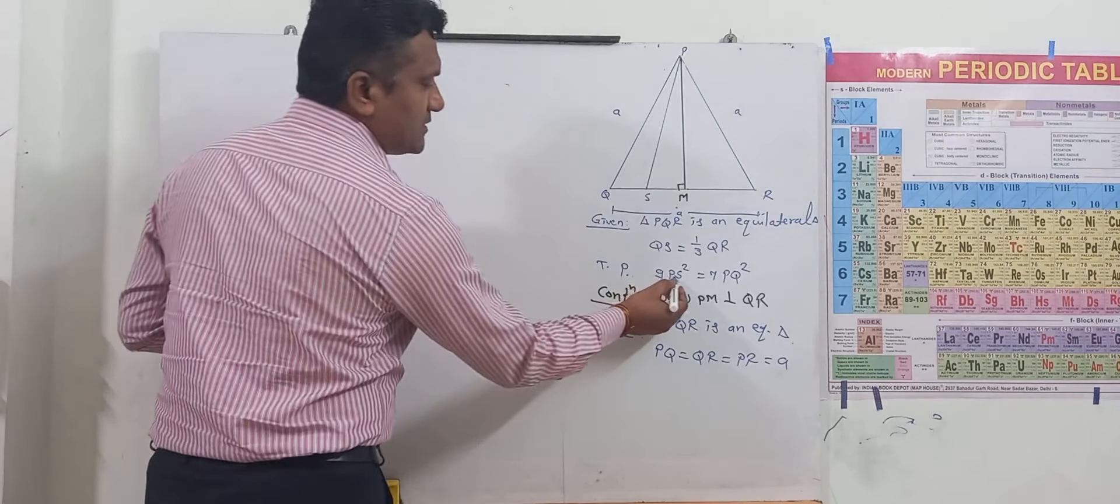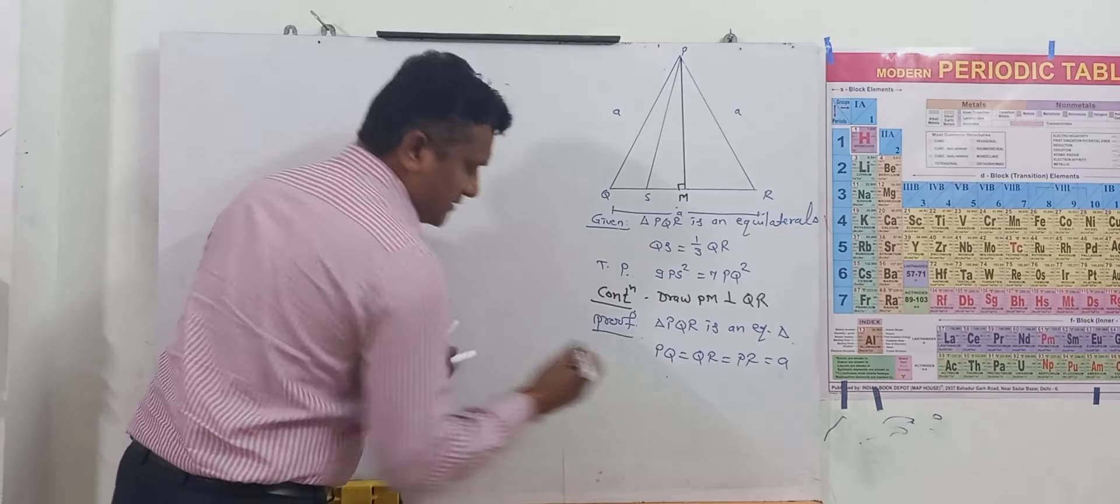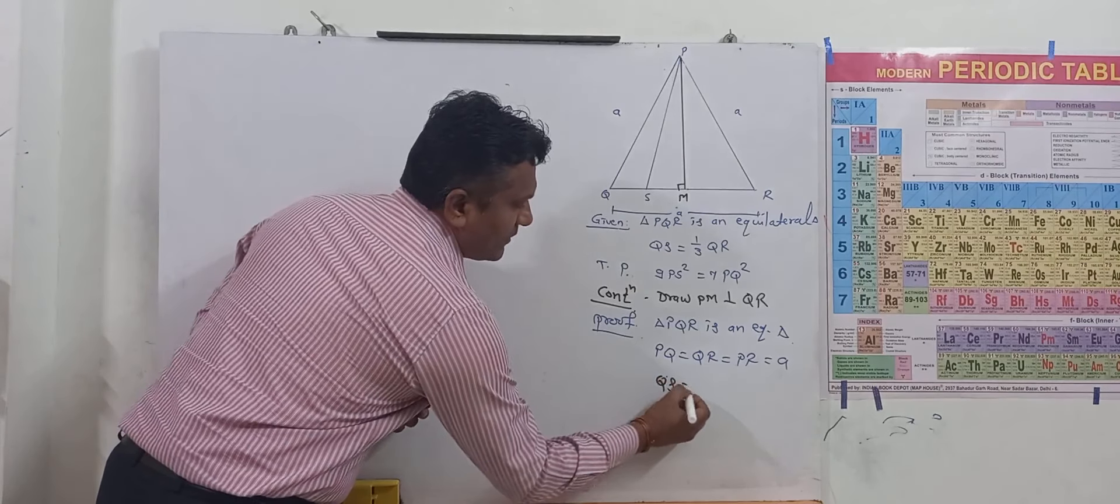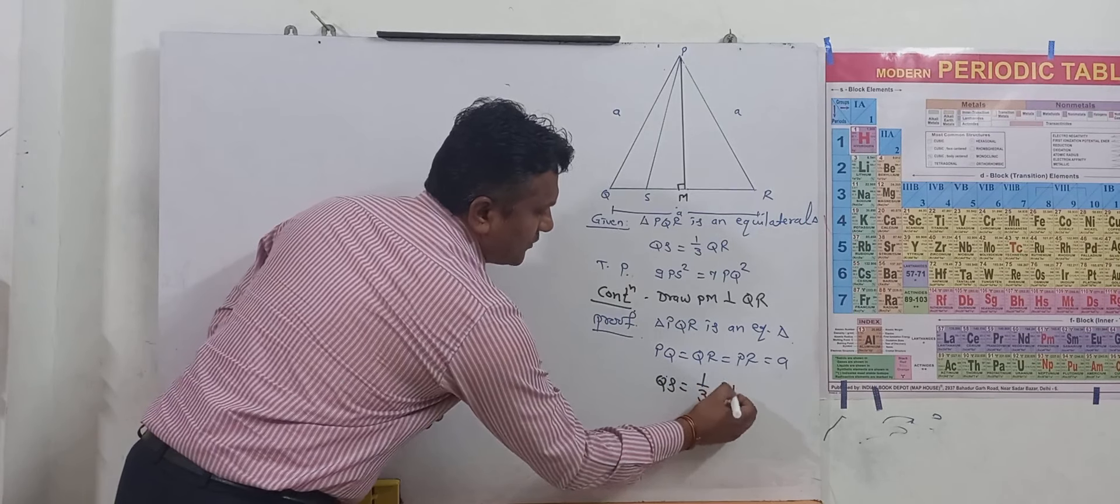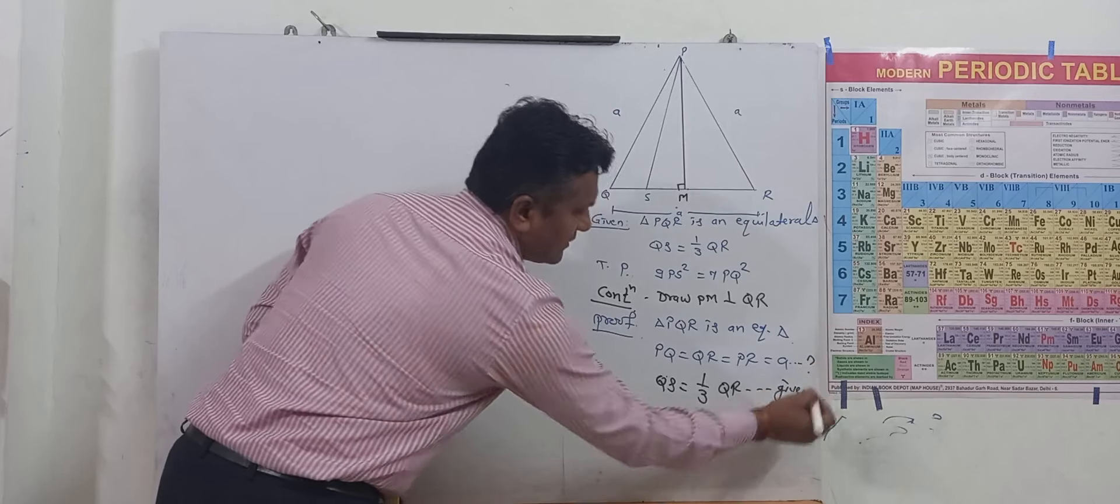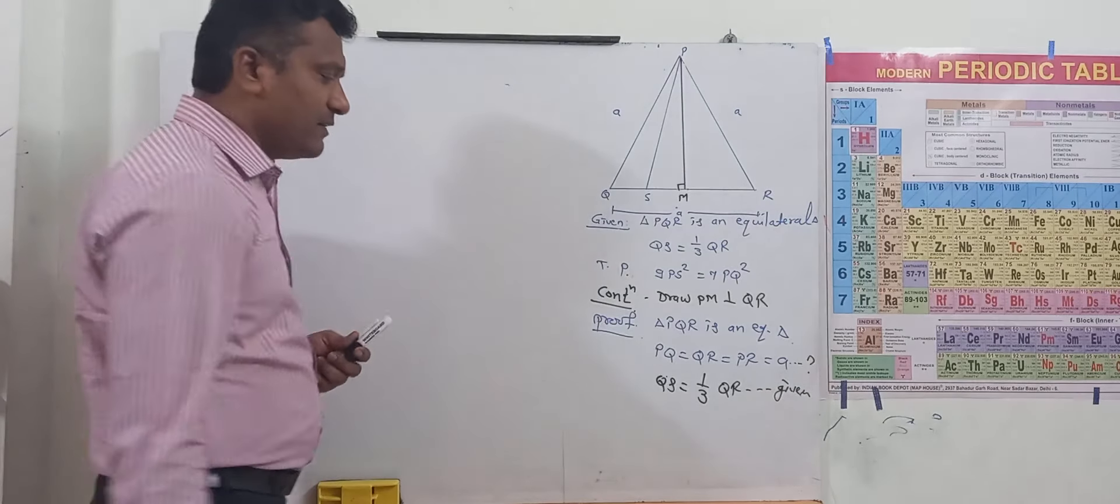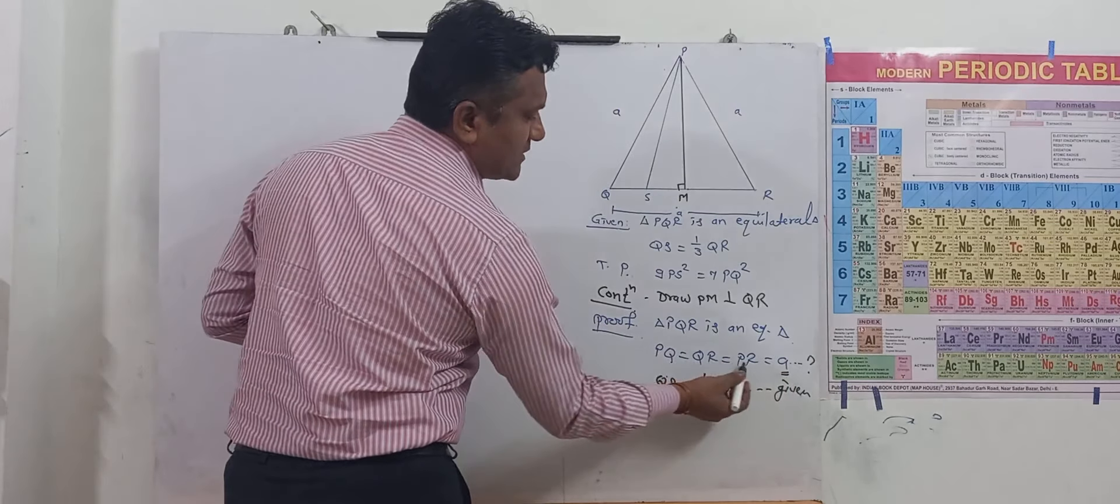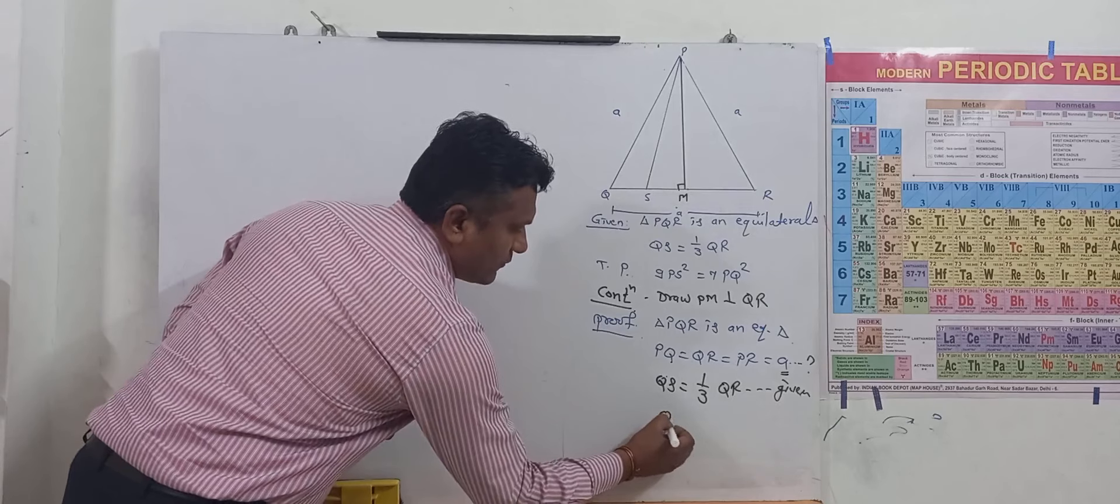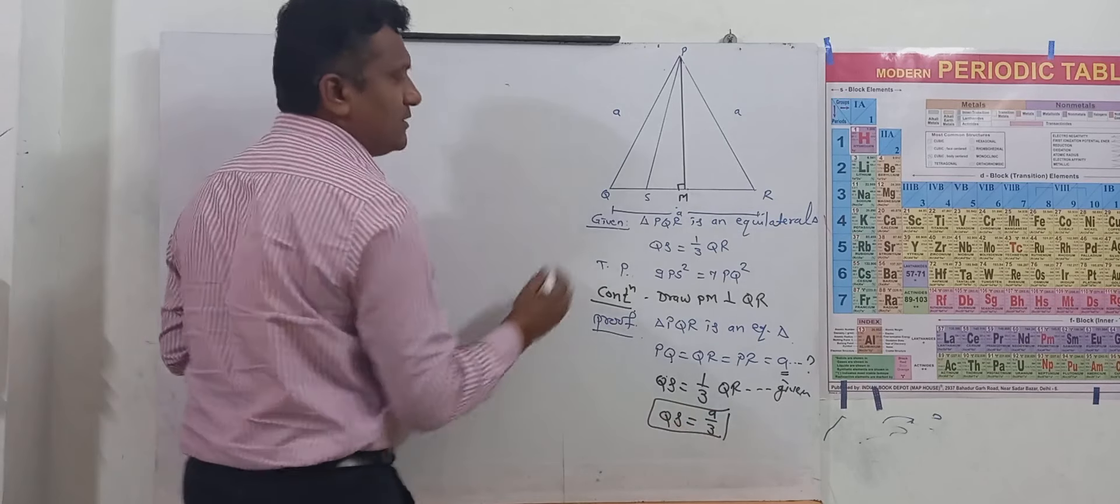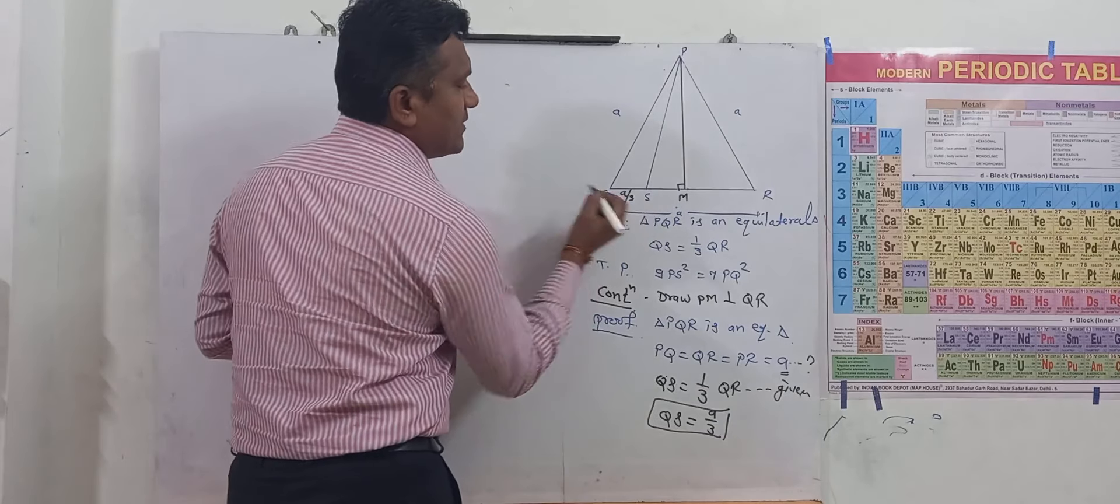And now look at the second relation that QS is given what, QS equals to 1 by 3 times QR. This is given. This is what region is given, sides of equilateral triangle. This is the first thing we got, this QS is A by 3.